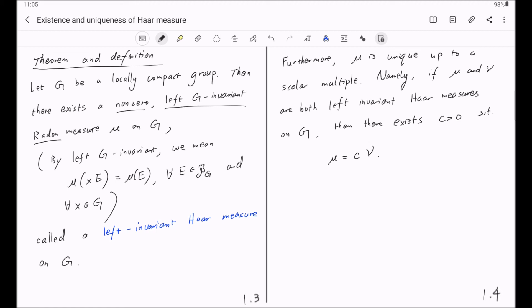And this finishes the statement of this theorem. And now here is a brief history on this theorem. Actually, the existence and uniqueness parts are due to two different mathematicians. The existence part was due to Haar, and the year is 1933.